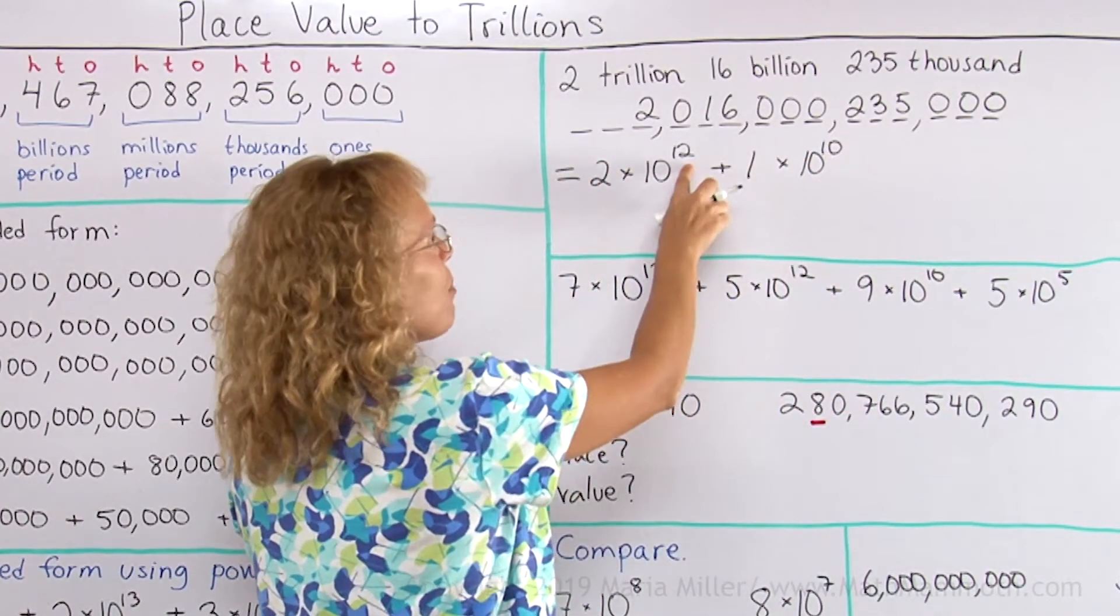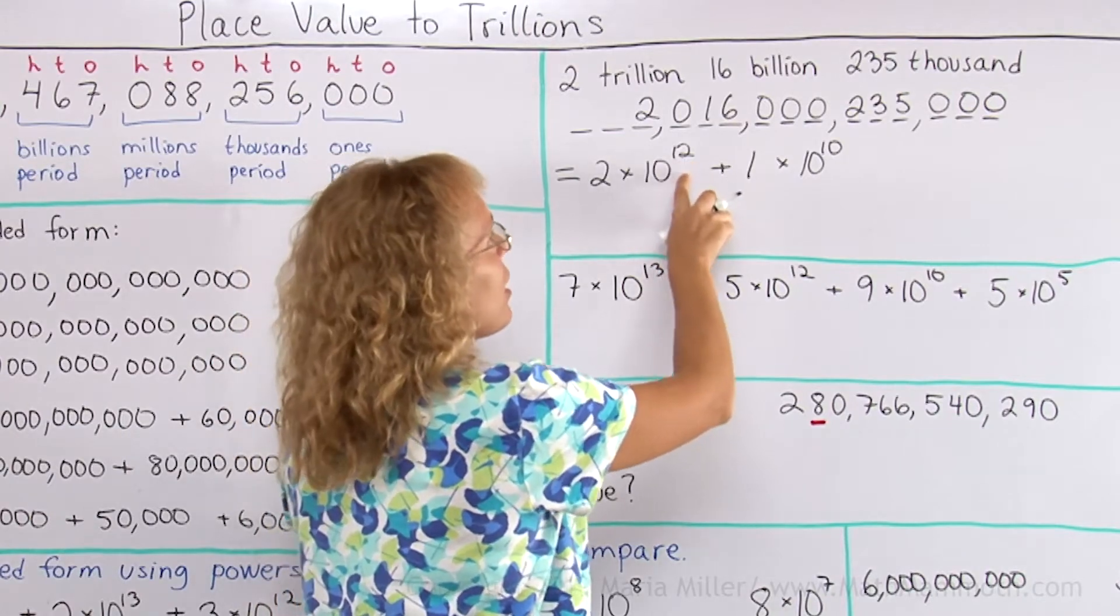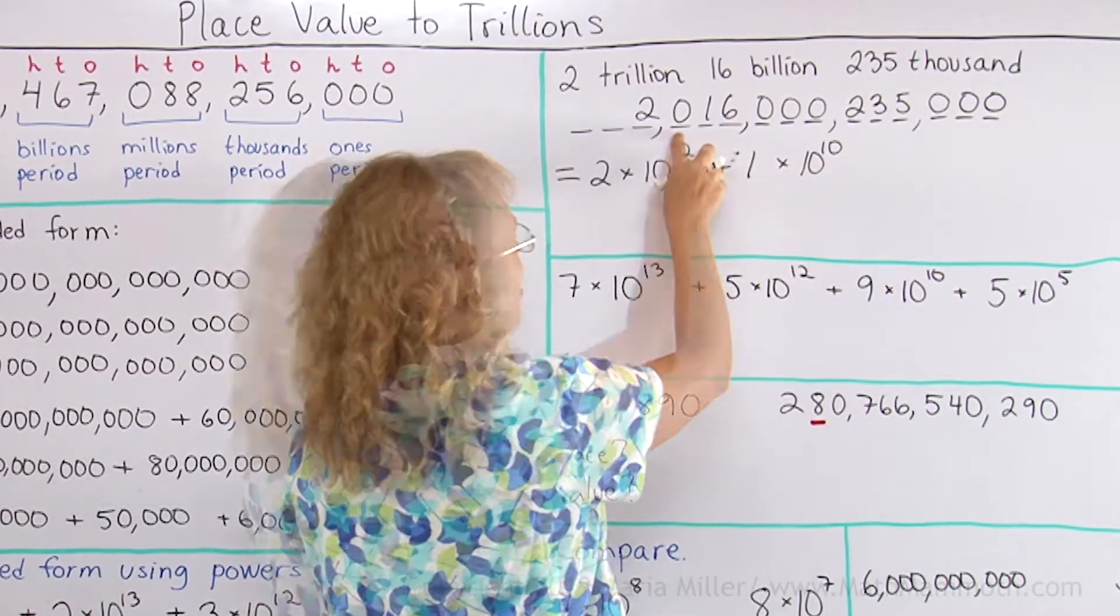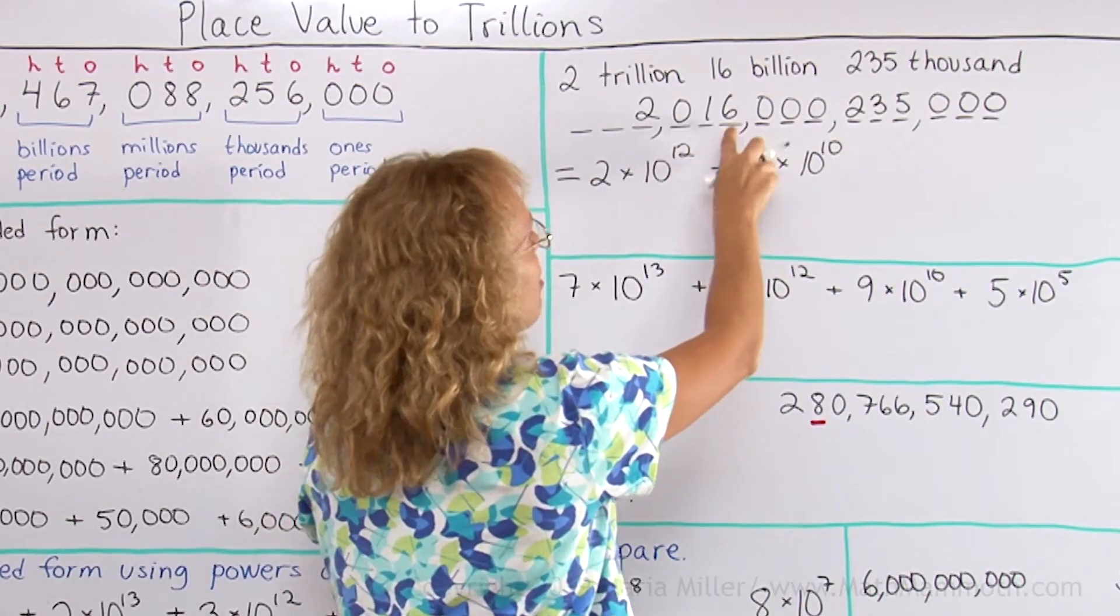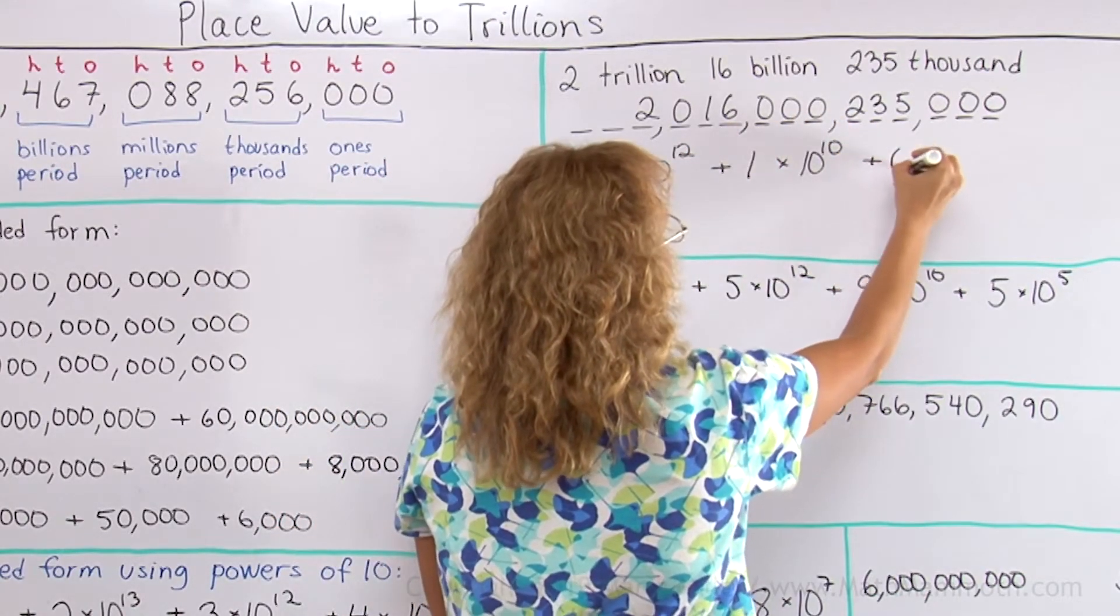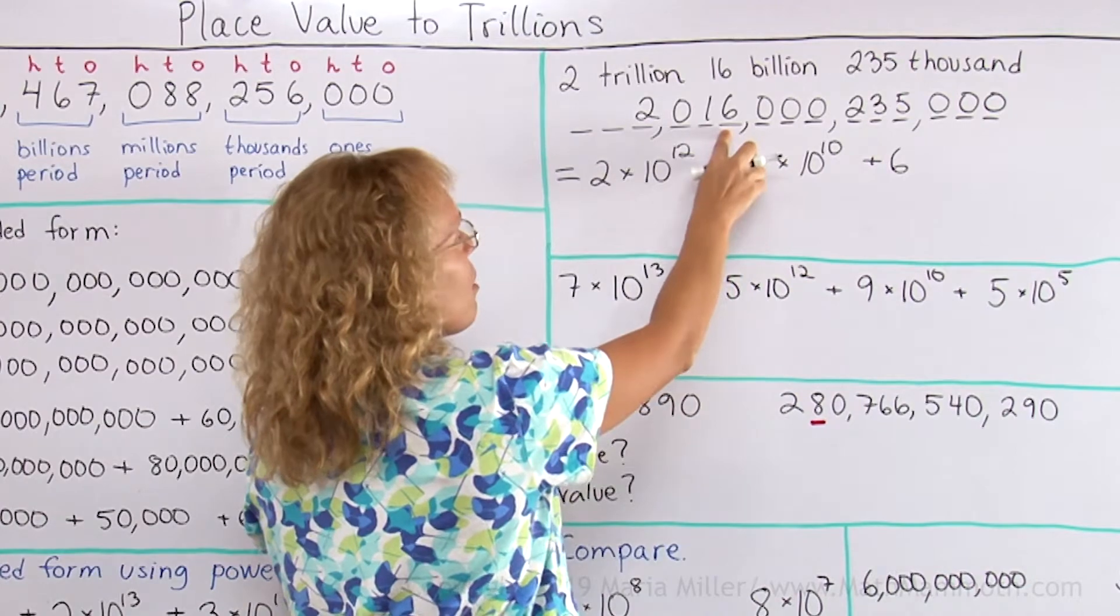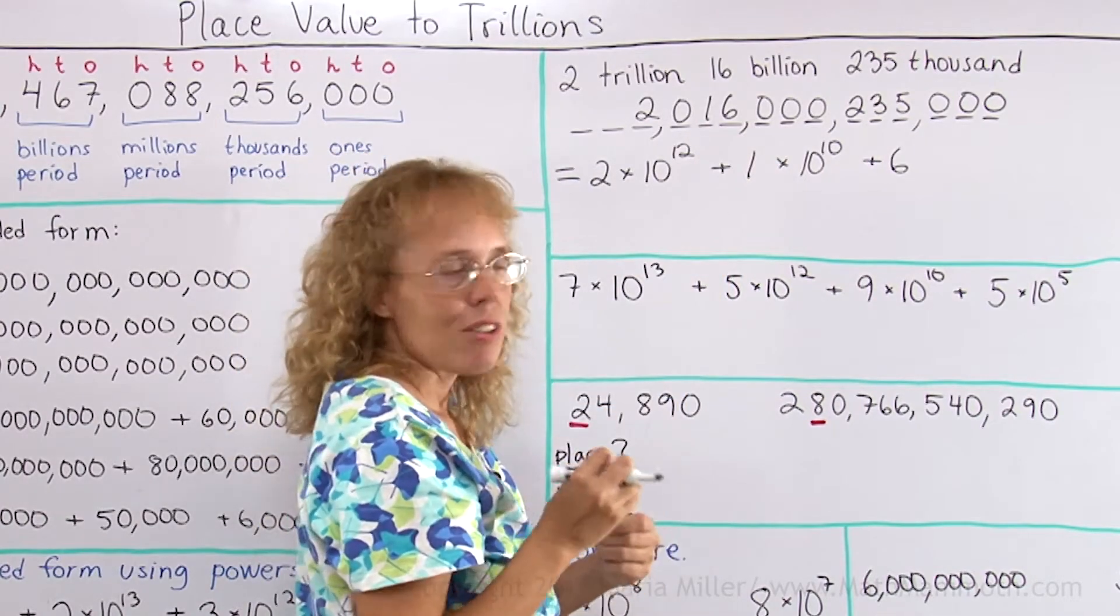It makes sense that I skipped from the exponent 12 to exponent 10 here, because there was this place that I skipped, being 0. Now I go to the 6. Okay, 6 is just after the 1, so it will be 10 to the 9th power.